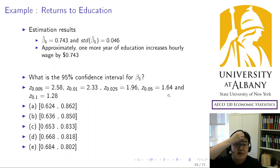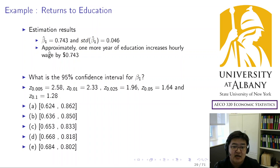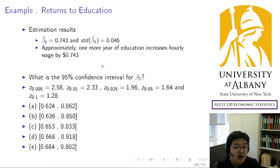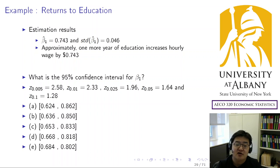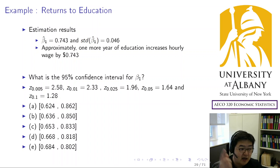Our estimation results give a point estimator of 0.743 and a standard error of 0.046 — one more year of education increases hourly wage by that much. From those two numbers, try to calculate the confidence interval yourself. You can also download the data I'll post with the slides and run the regression in Excel to find the confidence interval and choose the answer.